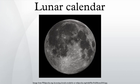Lunar and lunisolar calendars differ as to which day is the first day of the month. In some lunisolar calendars, such as the Chinese calendar, the first day of a month is the day when an astronomical new moon occurs in a particular time zone. In others, such as some Hindu calendars, each month begins on the day after the full moon or the new moon. Others were based in the past on the first sighting of a lunar crescent, such as the Hebrew calendar.